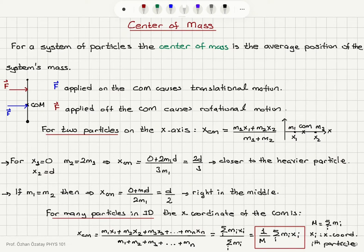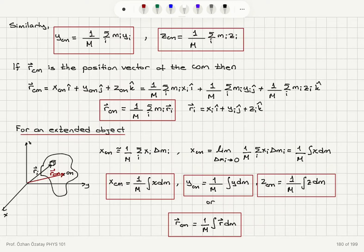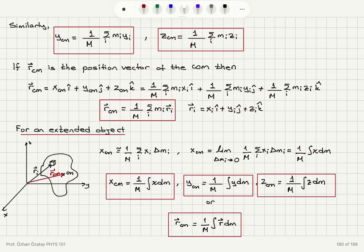For the i-th particle we calculate the product of its mass and x-coordinate. Similarly, the y-coordinate of the center of mass is (1/M) times the sum over i of mi*yi, and the z-coordinate of the center of mass is (1/M) times the sum over i of mi*zi.